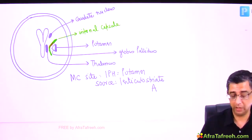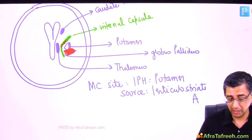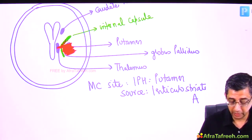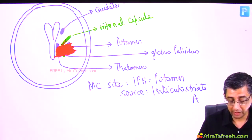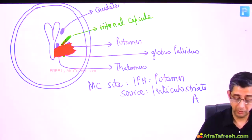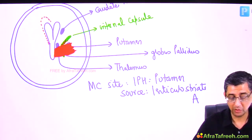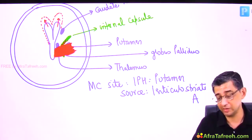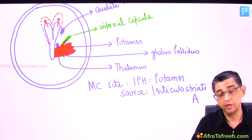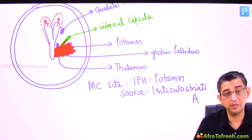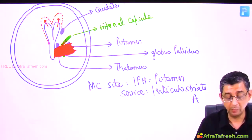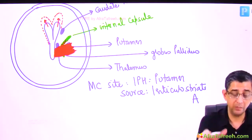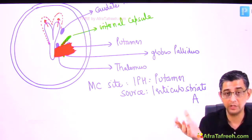As the bleed increases in size, it presses on the corticospinal pathway and the internal capsule, and can even involve the thalamus and compress the ventricles. Don't be surprised if the CT shows exaggerated ventricular appearance — this is obstructive hydrocephalus. The patient may then develop posturing; deterioration in brain hemorrhage can be very rapid.